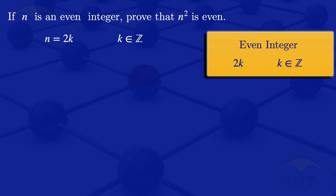What we want to prove is n squared. So we write n squared, and since n equals 2k, we just square 2k. So we have n squared equals (2k) squared, which gives us 4k squared.